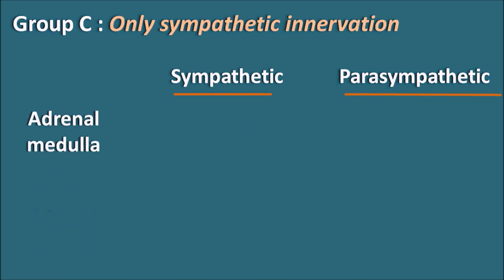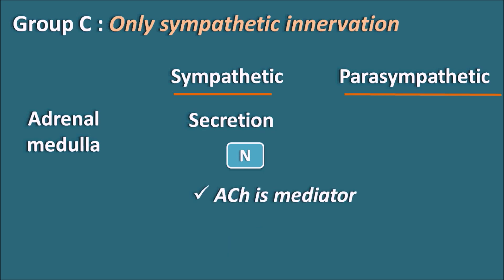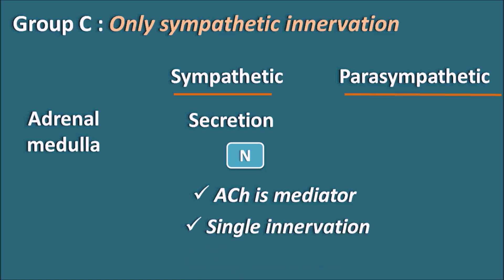At the adrenal medulla, the sympathetic system produces secretion by acting through nicotinic acetylcholine receptors. Here again, acetylcholine is the mediator. The adrenal medulla is supplied by a single neuron instead of two neurons. By stimulation of the adrenal medulla, it can release both epinephrine as well as norepinephrine. The parasympathetic system has no effect at the adrenal medulla.